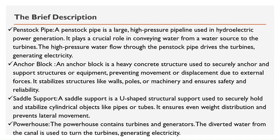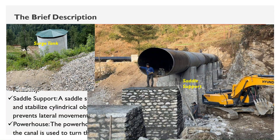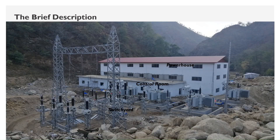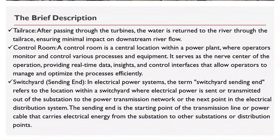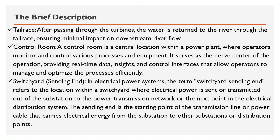Saddle support: a U-shaped structural support used to securely hold and stabilize cylindrical objects like pipes or tubes, ensuring even weight distribution and preventing lateral movement. Powerhouse: the powerhouse contains turbines and generators; the diverted water from the canal is used to turn the turbines, generating electricity. The used water is then returned to the river through the tail race, ensuring minimal impact on downstream river flow.